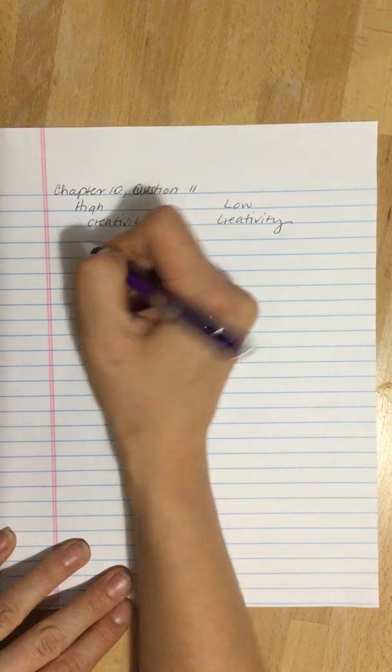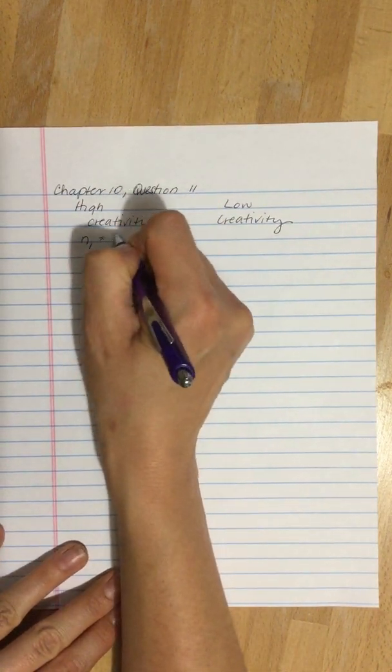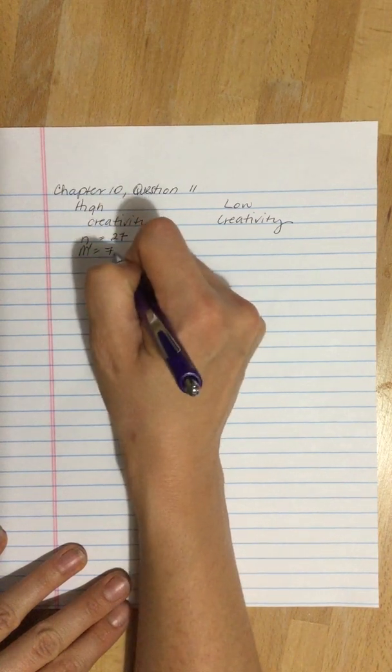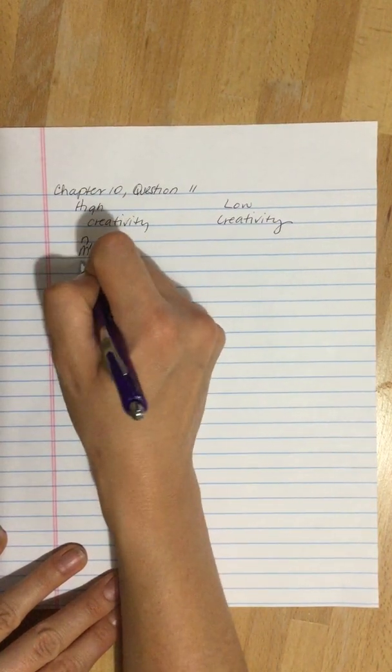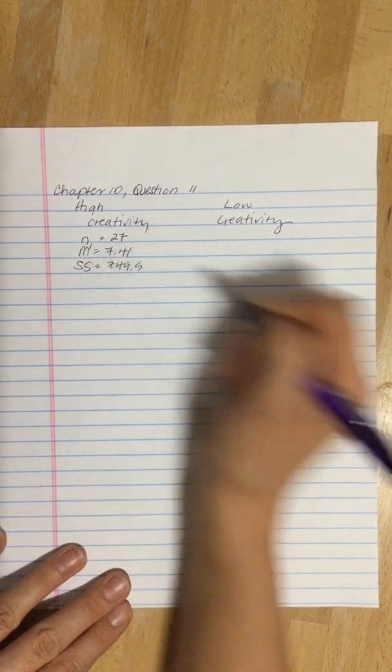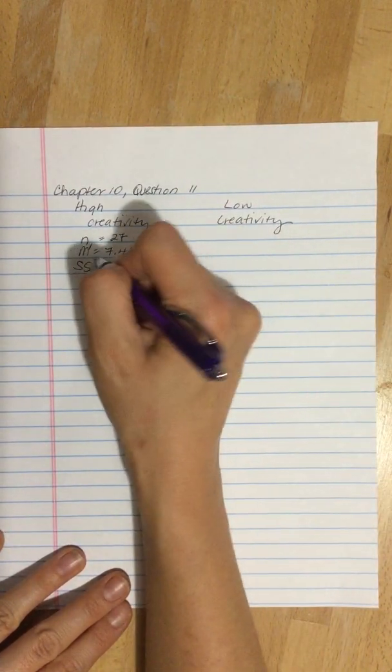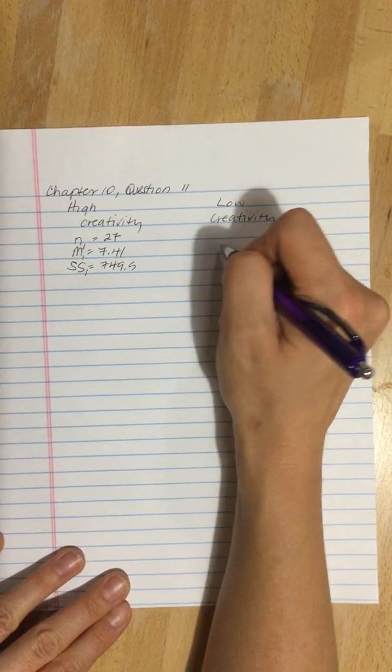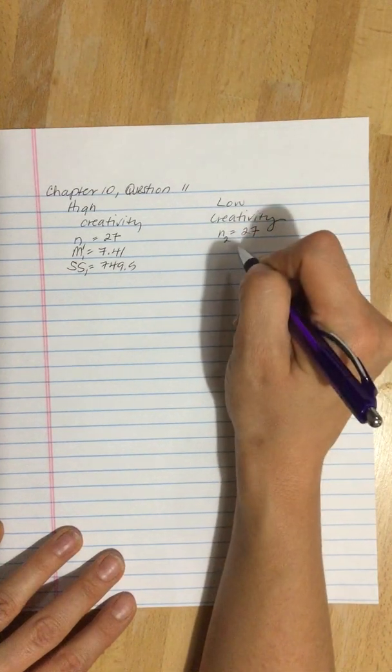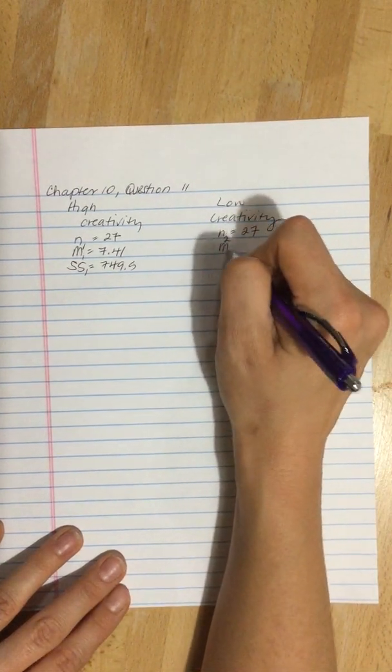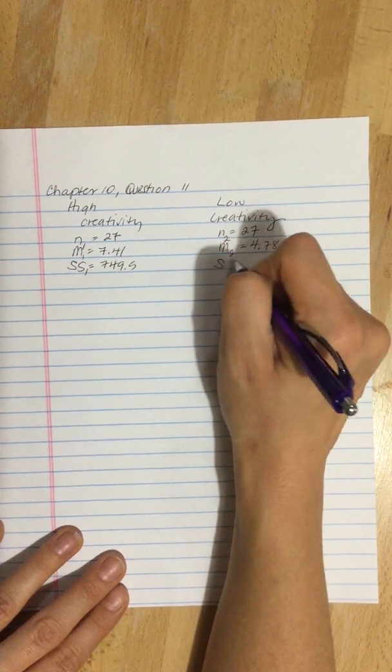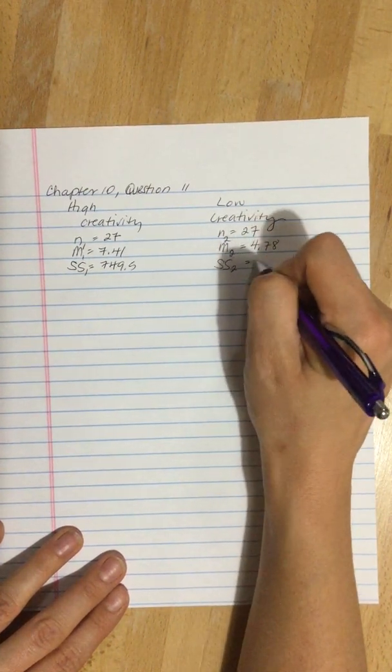High creativity: there's a sample size of 27, a mean of 7.41, and a sum of squares equal to 749.5. For the low creativity group we've got an n of 27, so the sample sizes are the same. We've got a mean of 4.78 and a sum of squares equal to 830.